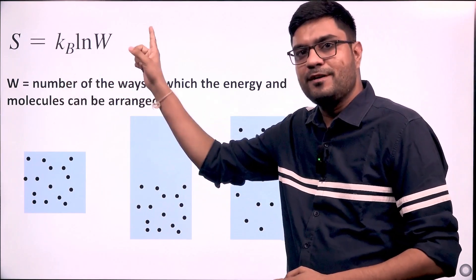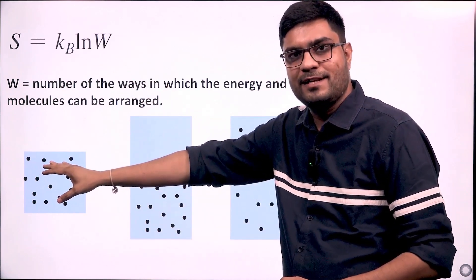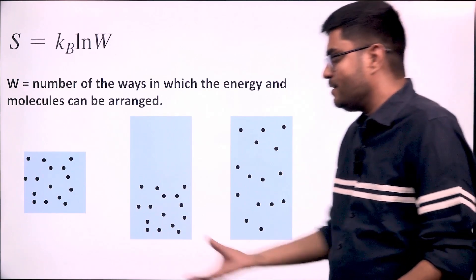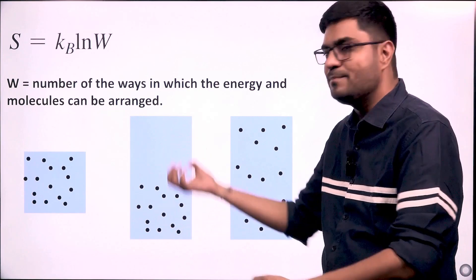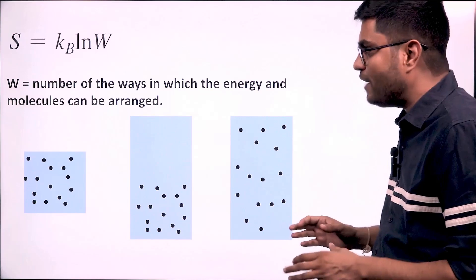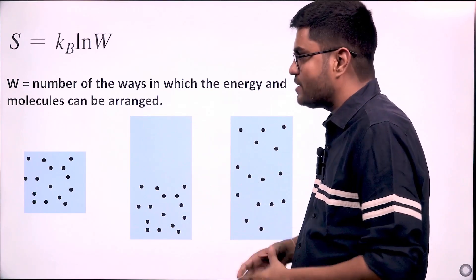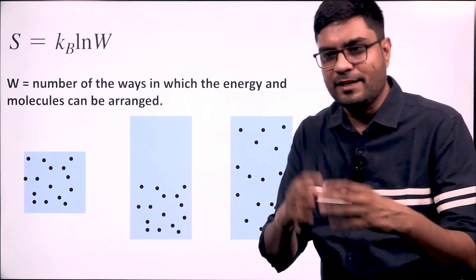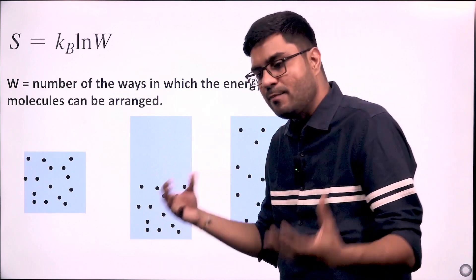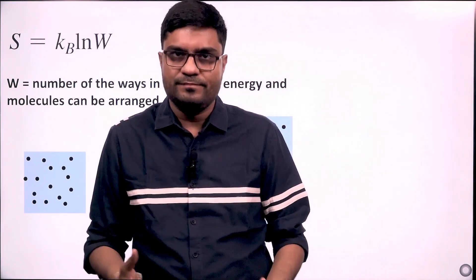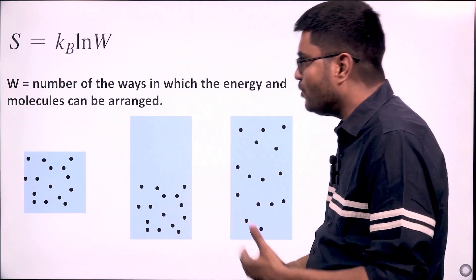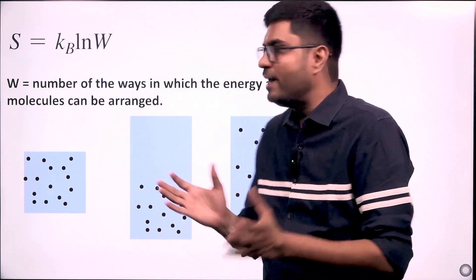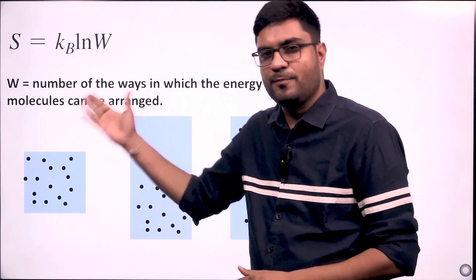So entropy is dependent upon W. In stage one entropy is less and in stage two entropy is high — the entropy is increasing overall. The sugar molecules are dispersing spontaneously because entropy is increasing. So coming back to the definition of W — the number of ways in which energy and molecules can be arranged — a system with a certain number of molecules that move freely has a high degree of freedom. More the degree of freedom, more the ways of arrangement, more ways molecules can disperse themselves, which defines W. And if the value of W is high, then entropy is going to be high.